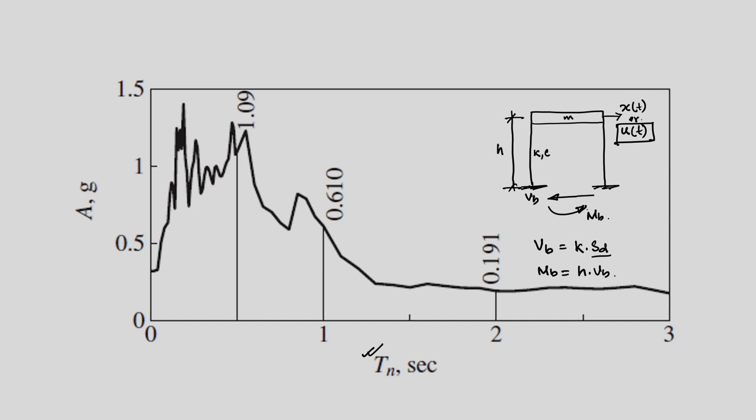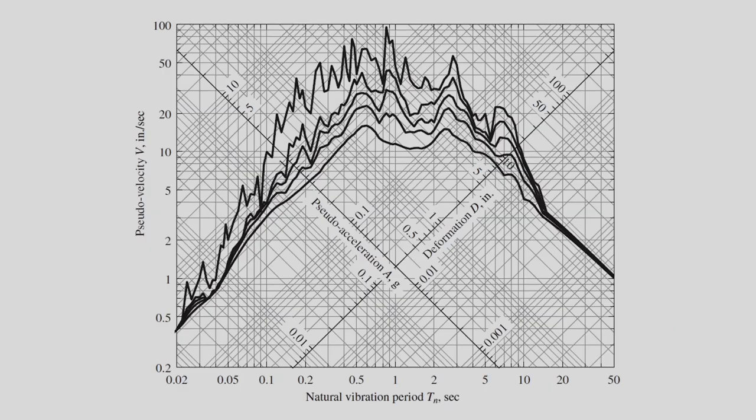Because we have already solved the time history response, and for every possible value of T_n and eta, we already have the maximum response. We also discussed one important aspect: instead of having three different plots for displacement, velocity, and acceleration, we can combine them into a single plot. This is called the tripartite response spectrum because it has three different quantities.